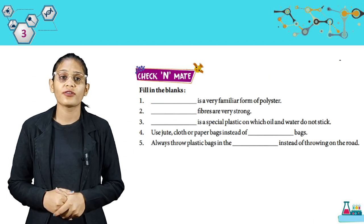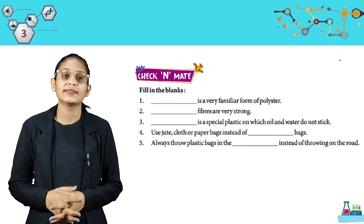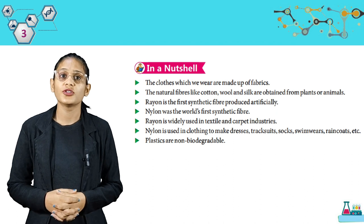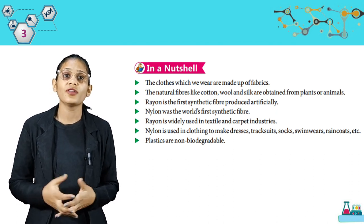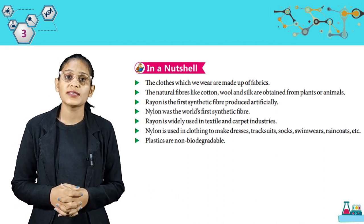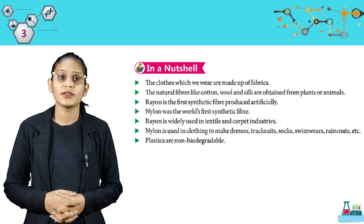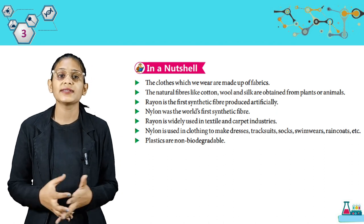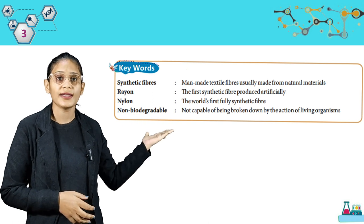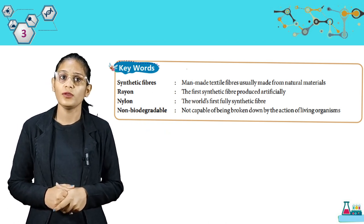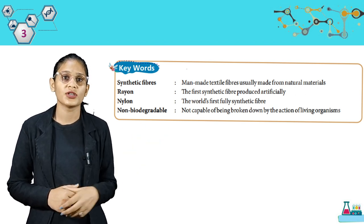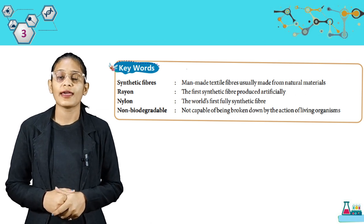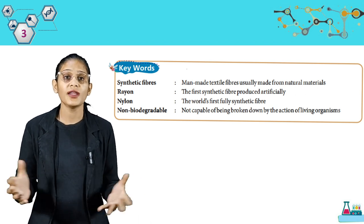Check and mate — you can do it by yourself. What we learned in this chapter in a nutshell: the clothes we wear are made of fabrics. Natural fibers like cotton, wool and silk are obtained from plants or animals. Rayon is the first synthetic fiber produced artificially, widely used in textile and carpet industries. Nylon was the world's first fully synthetic fiber, used in clothing to make dresses, track suits, socks, swimwear, raincoats, etc. Plastics are non-biodegradable. Keywords: synthetic fibers — man-made textile fibers usually made from natural materials; rayon — the first synthetic fiber produced artificially; nylon — the world's first fully synthetic fiber; non-biodegradable — not capable of being broken down by the action of living organisms. Thank you, students. We will meet again in the next chapter. Till then, revise what we learned today.